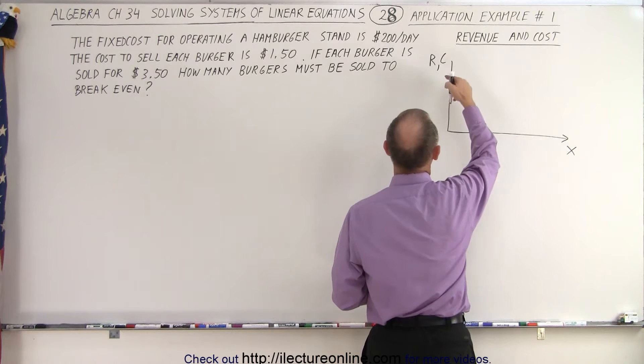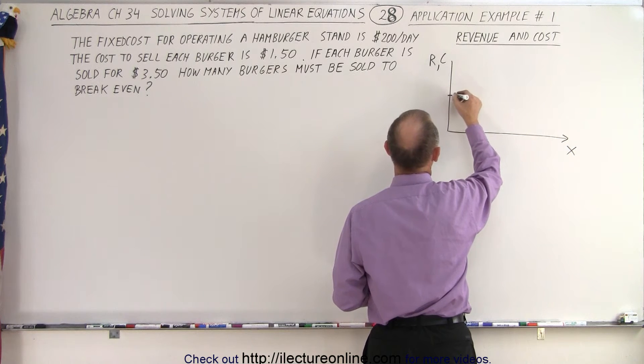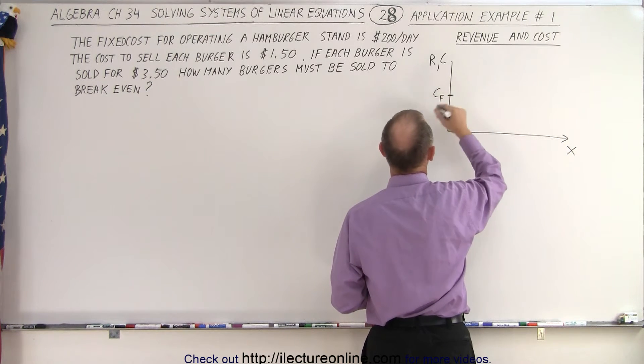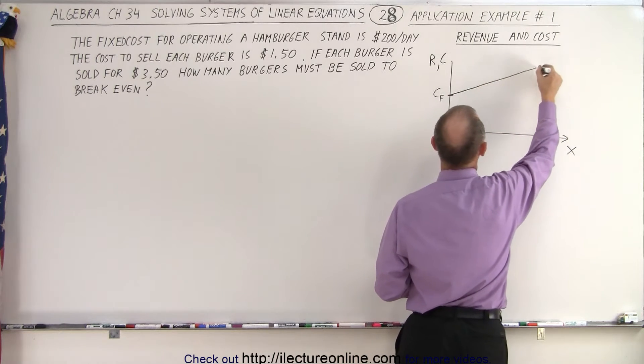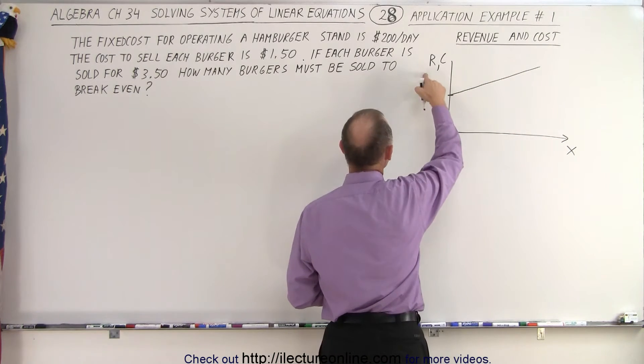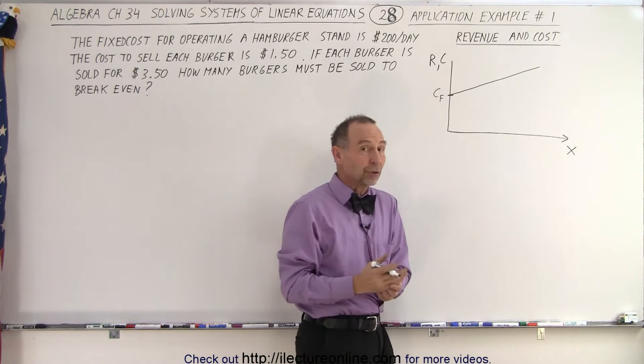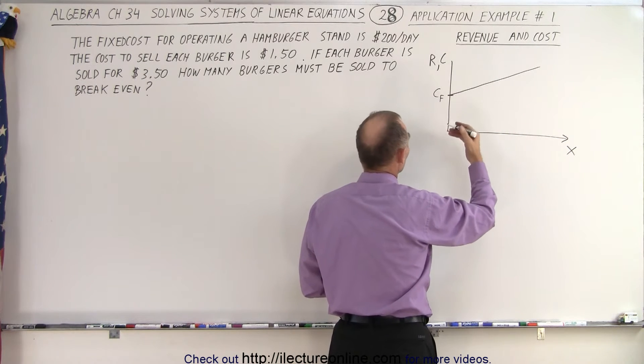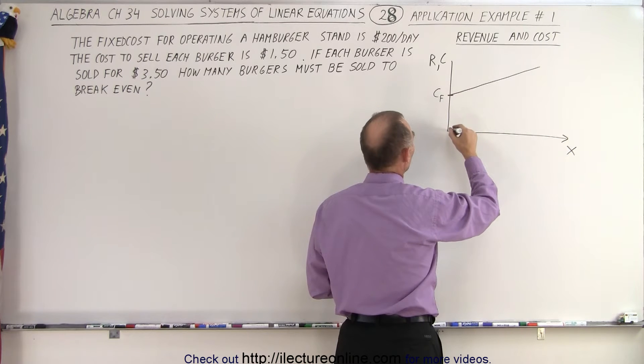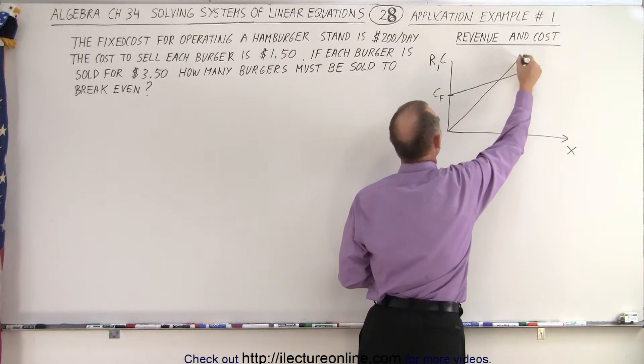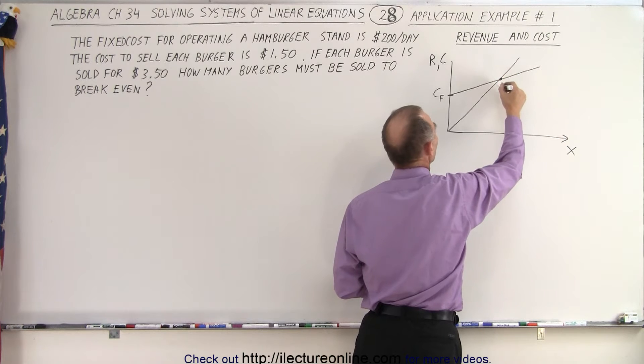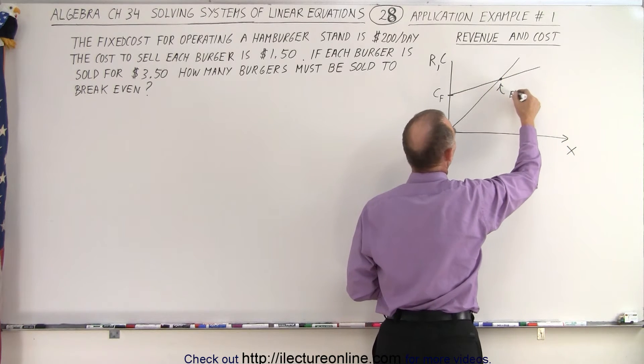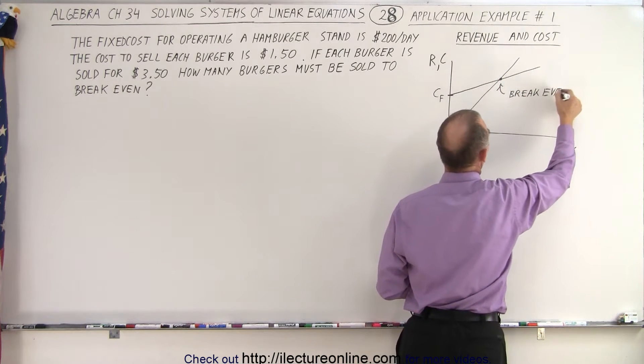And so the cost has a fixed cost. So this would be the fixed cost and on the variable cost, the more you make, the more you have to spend. On the revenue, well when you don't sell any burgers you don't make any revenue at all, so you start from here. But since you sell each burger for more than it costs to make one, eventually you'll see that you have what we call the break-even point.